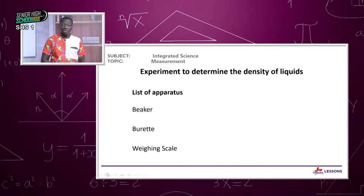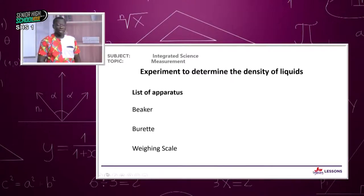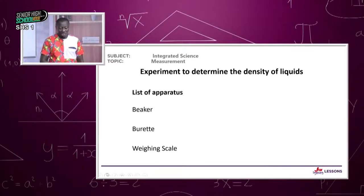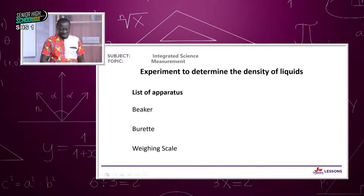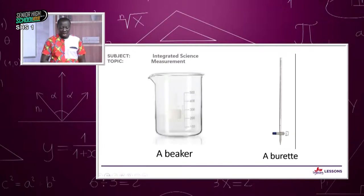To help us determine density, you will need certain apparatus. We use a beaker and also a burette as well as a weighing scale. The beaker helps us measure rough volumes of liquids, and we can also use it for weighing objects using small beakers.